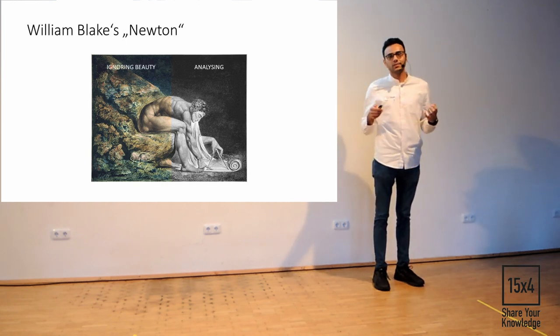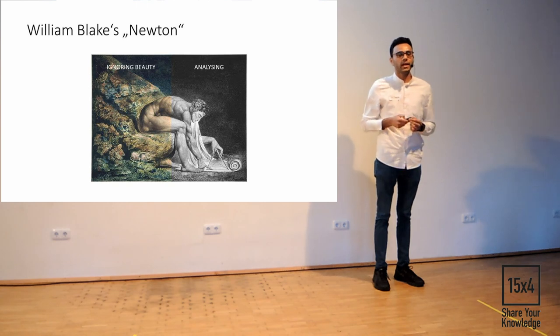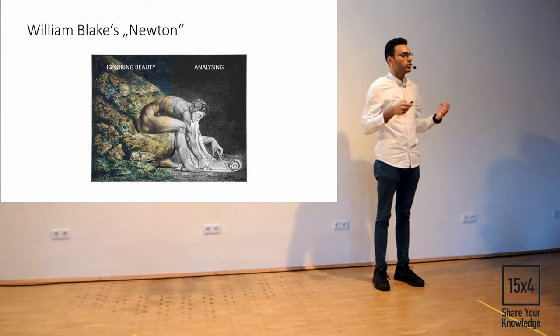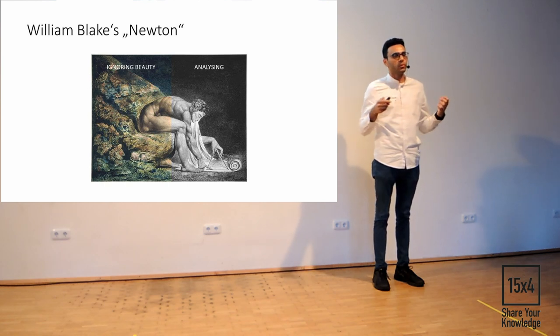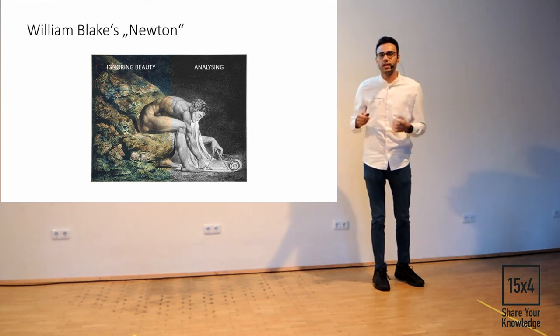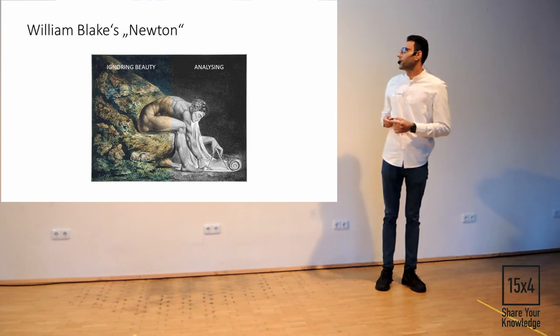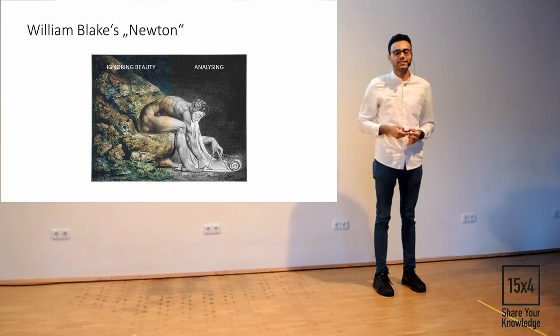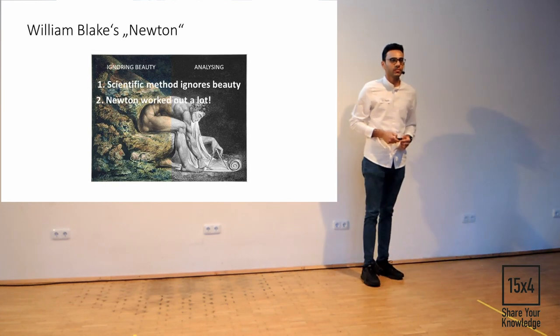He was against the Enlightenment movement and said that if you reduce something to numbers, or if you decompose it, then you lose the beauty of that thing. The message that William Blake gives first is that scientific method ignores beauty, and the second message is that apparently Newton worked out a lot.